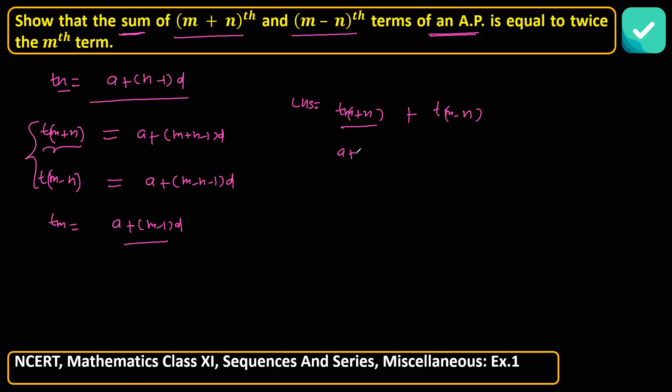So t of m plus n plus t of m minus n. You can assume it is LHS. The value of m plus nth is a plus m plus n minus 1 into d, plus m minus nth is a plus m minus n minus 1 into d. Simplify: you'll get a plus md plus nd minus d, plus a plus md minus nd minus d. A and a, that's 2a. Nd positive and negative cancel, md plus md is 2md, minus d and minus d is minus 2d.